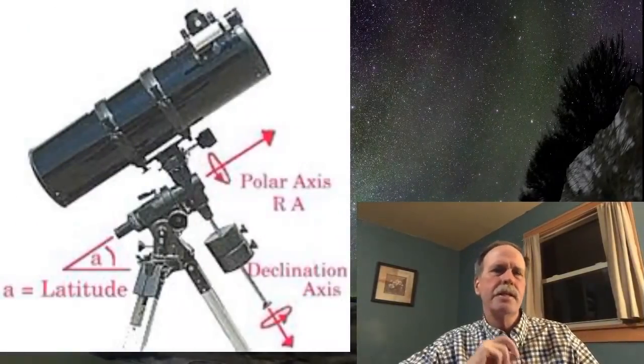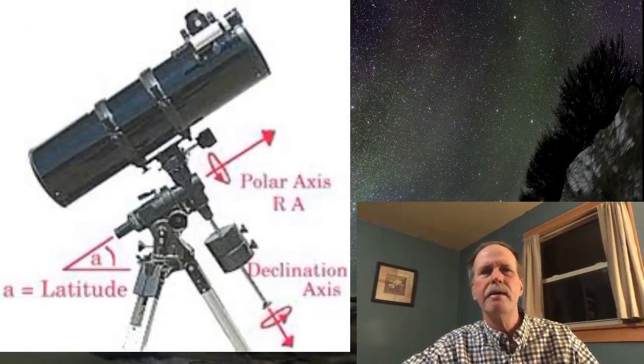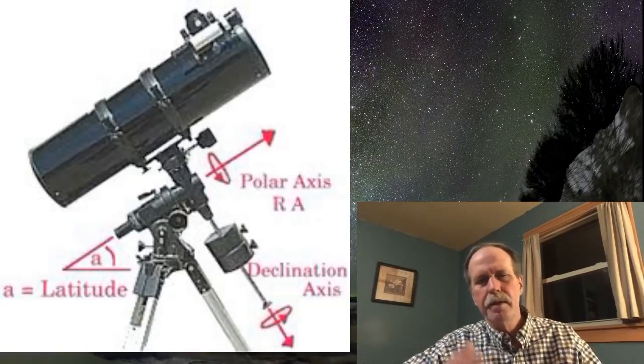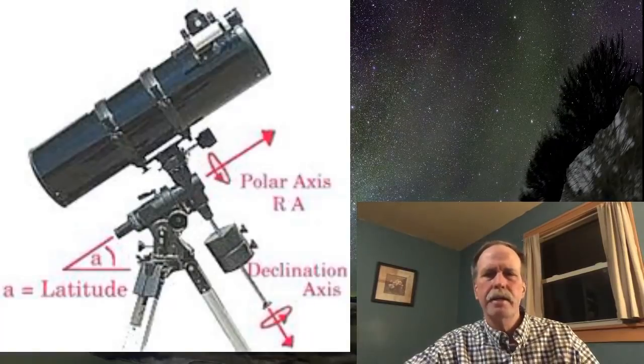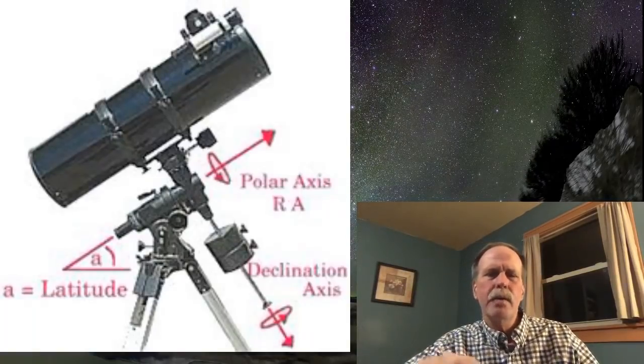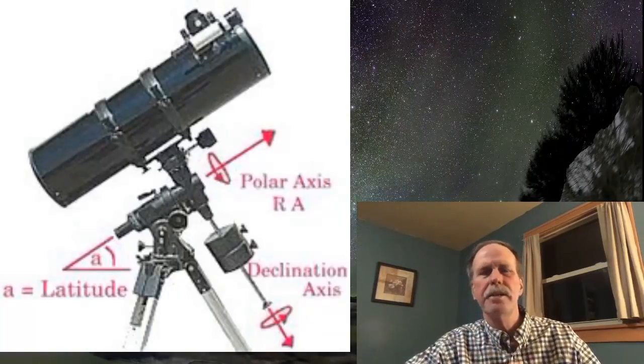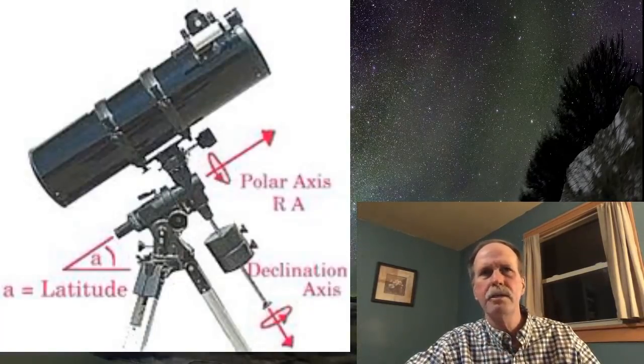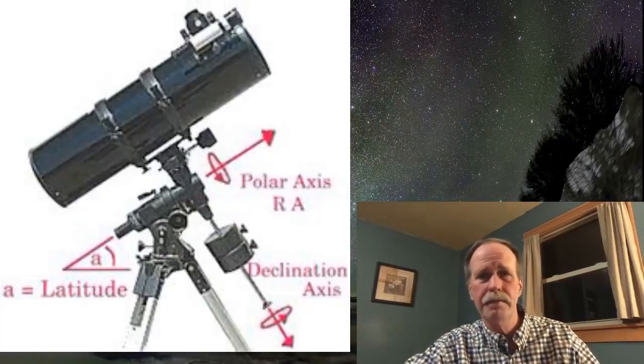In order to have a basic understanding of how a star trail is formed, we have to understand how an equatorial mount works. This is a photograph of a German equatorial mount, which is pretty standard. You'll see something there called the polar axis. That red arrow is pointed directly at the northern or the southern celestial pole. We're going to discuss this in terms of the northern celestial pole because I live in the United States.